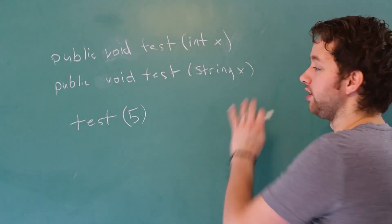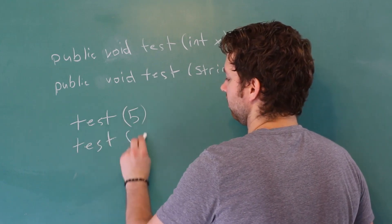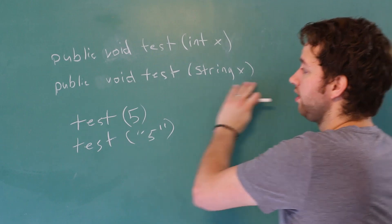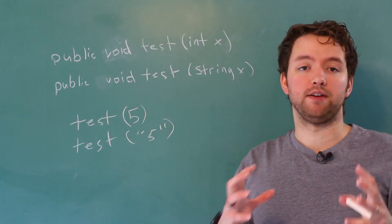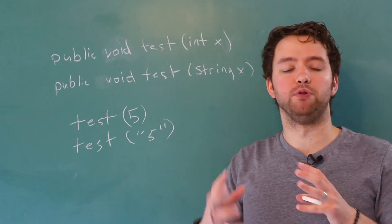This one on the other hand takes a string, so if we did this and passed in 5 in quotes, it's going to invoke this version.